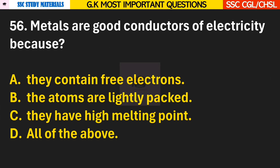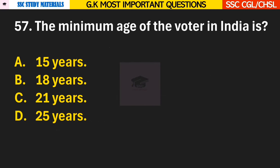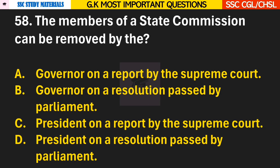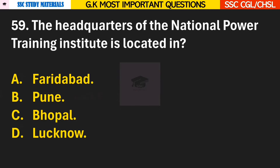Question 56: Metals are good conductors of electricity because? Answer A — they contain free electrons. Question 57: The minimum age of the voter in India is? Answer B — 18 years. Question 58: The members of a state commission can be removed by the? Answer C — President on a report by the Supreme Court. Question 59: The headquarters of the National Power Training Institute is located in? Answer A — it is located in Faridabad.